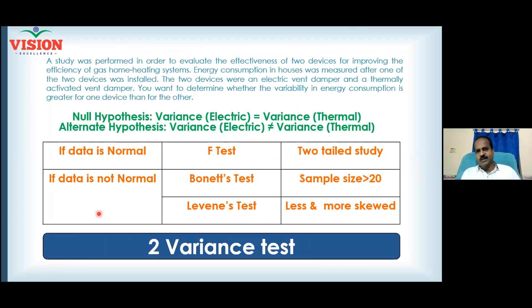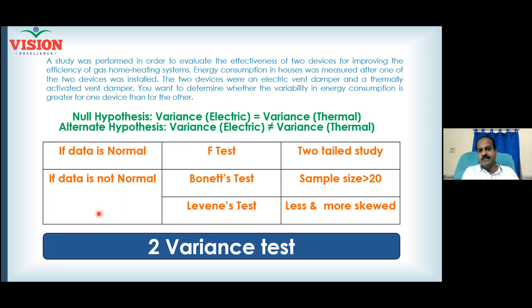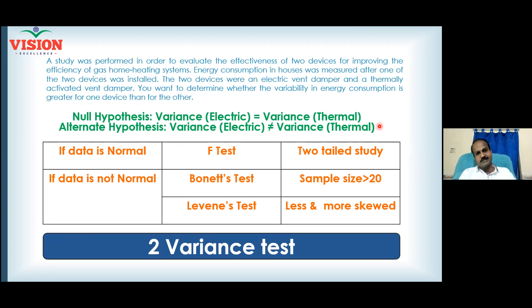For the same problem: you are manufacturing an in-home heater — one works with an electric damper and another with a thermal damper — and you are interested in comparing energy consumption. The energy consumption data for the electric damper and for the thermal damper are available, and you want to compare the variance in each dataset. The two-variance test becomes an F-test if the data are normal. It becomes Bonnet's test or Levene's test if the data are skewed — specifically Bonnet's test if the number of samples is more than 20, and Levene's test if less than 20.